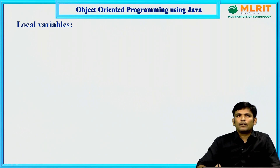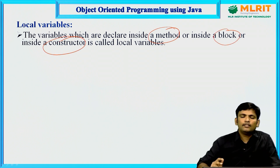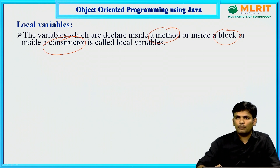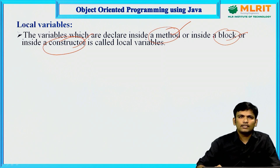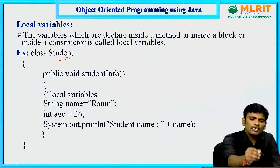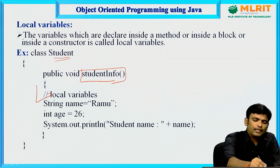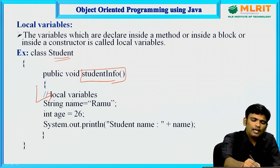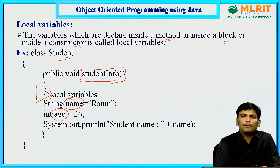First, local variables. Variables which are declared inside a method, inside a block, or inside a constructor are called local variables. In a class Student with a method studentInfo, any variable declared inside that method — such as name or age — is a local variable.